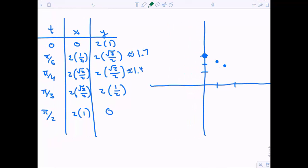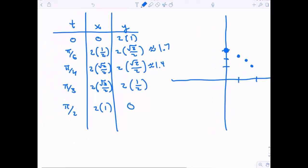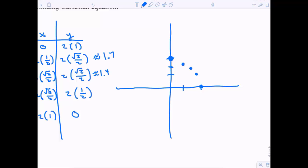And then finally 2, 0. So looking at this, it looks like maybe part of a circle or something. It's not a straight line for sure.